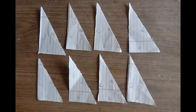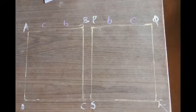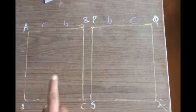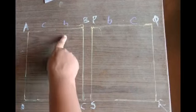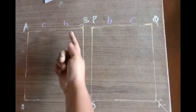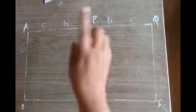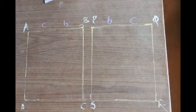I have taken 8 identical right angled triangles whose hypotenuse is 'a', one side is 'b', and the other side is 'c'. Now I will draw 2 squares — square ABCD and square PQRS — each with side (b + c). Each side of both squares is b + c units. There are 2 squares with side (b + c) units.